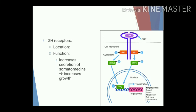Growth hormone receptors are of different sizes and are present on the cell membrane of target tissues, mainly liver and adipose tissue. They belong to the cytokine family of receptors and have three parts: one large extracellular portion, a transmembrane domain, and a large intracellular cytoplasmic portion. When growth hormone binds with the receptor, it increases production of insulin-like growth factor through gene expression, mediated by tyrosine phosphorylation of signal transducer and activator of transcription (STAT). Therefore, the pathway is known as the JAK-STAT pathway.